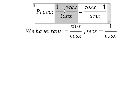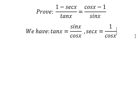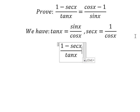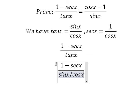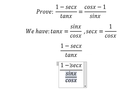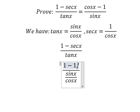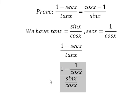Now we need to consider this expression. So tan x we replace with sine x over cosine x, and secant of x we replace with 1 over cosine x.